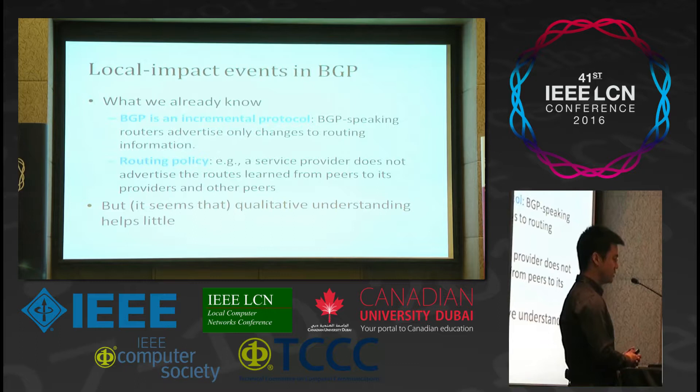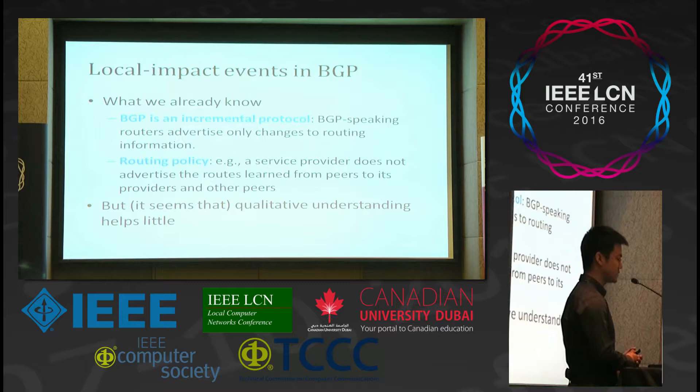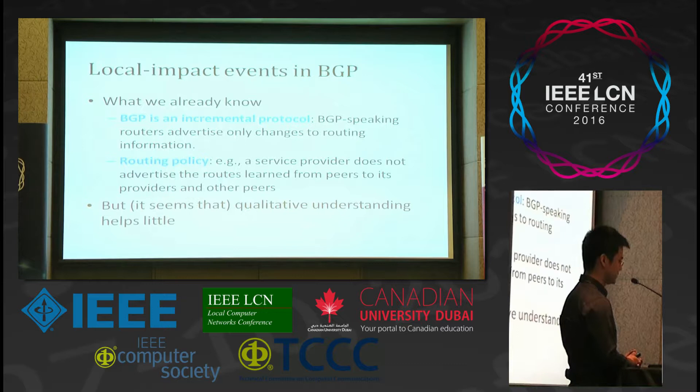In BGP, what we already know is that BGP is an incremental protocol — BGP-speaking routers advertise only changes to routing information. The second fact is that BGP uses routing policy: for example, a service provider does not advertise routes learned from peers to its providers and other peers. These two facts quite limit the propagation of BGP updates. However, this knowledge seems not to help people devise better methods.